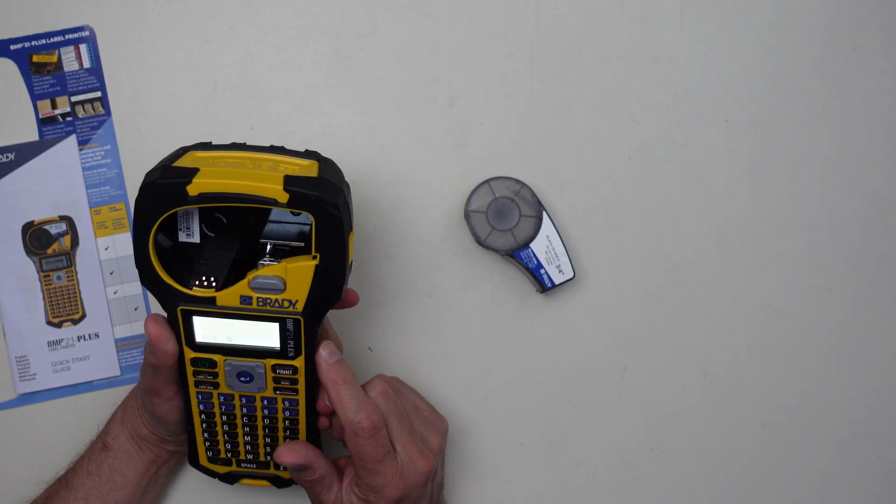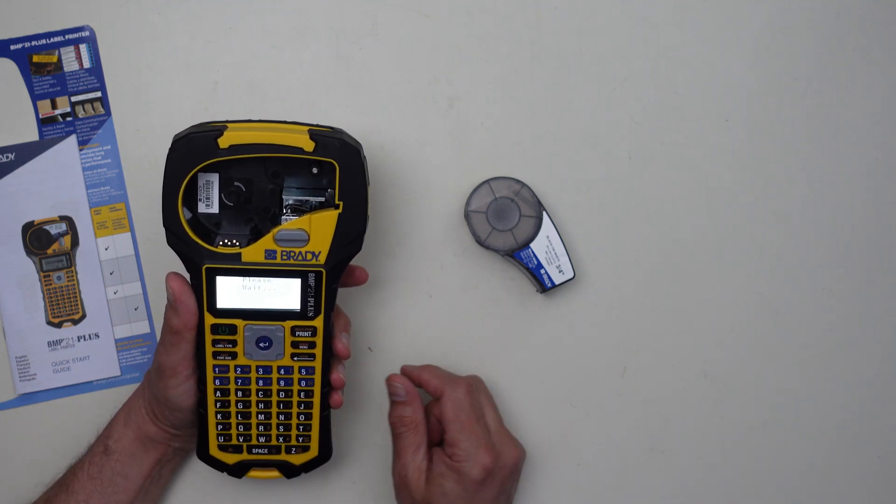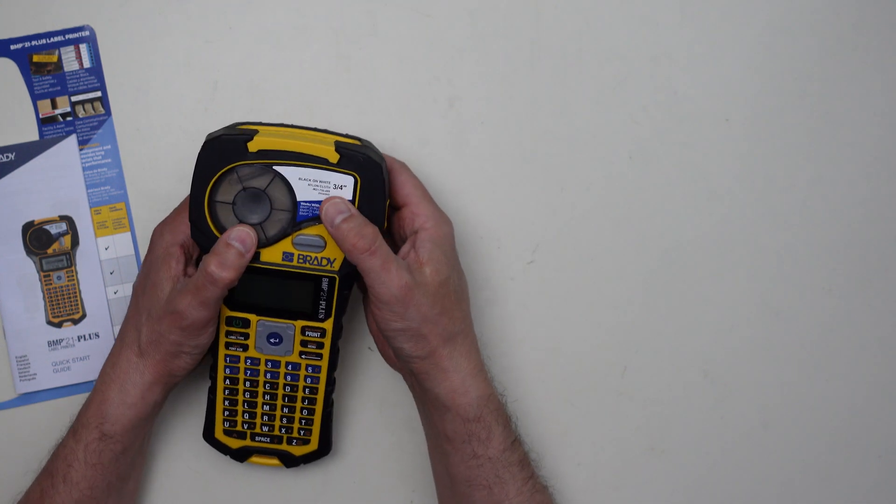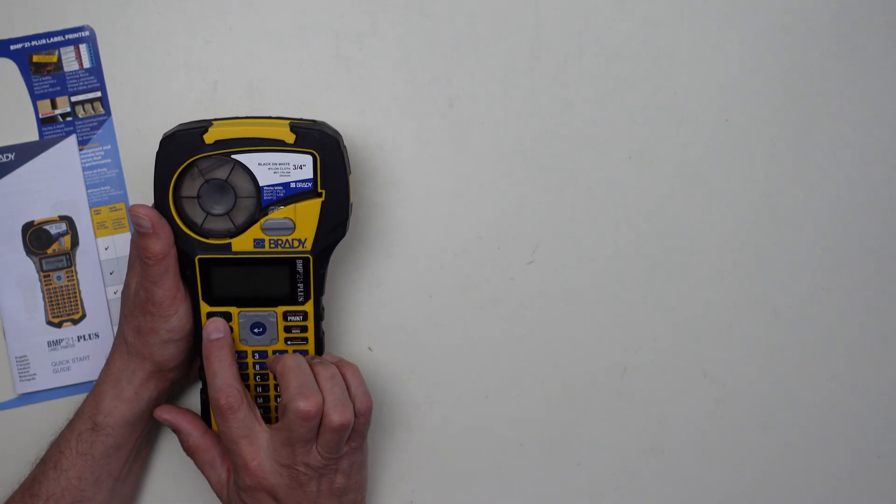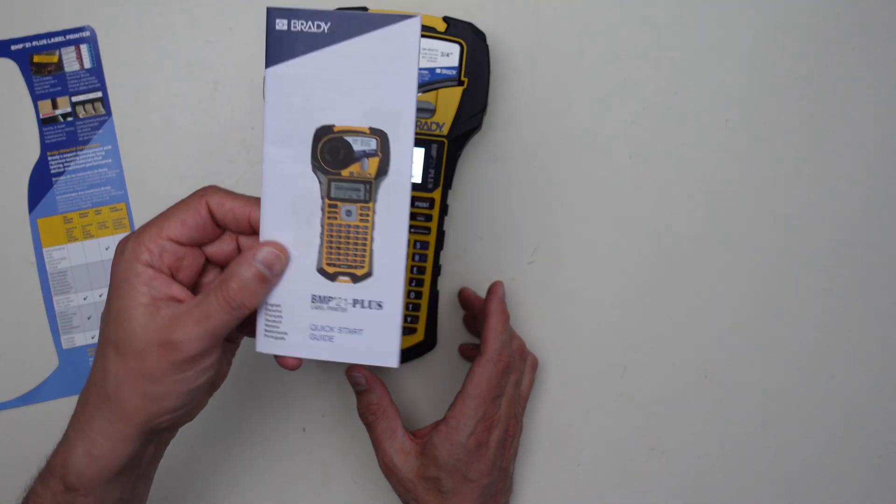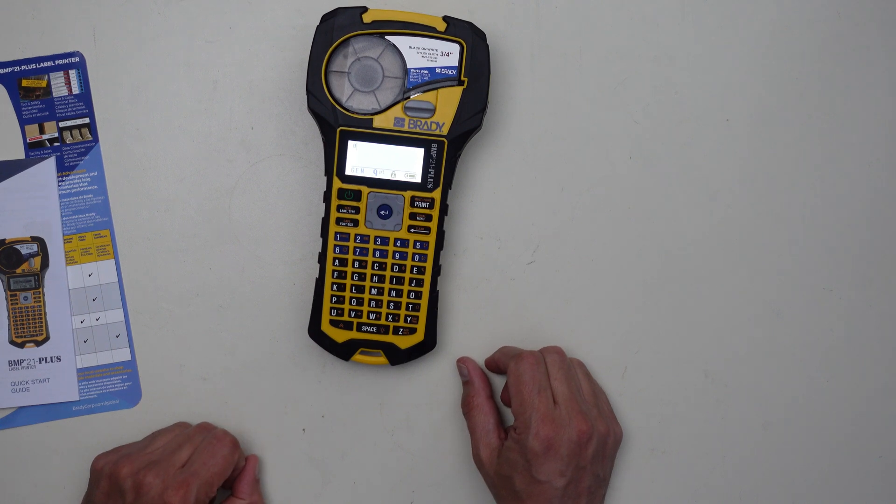It came on already. I guess I must have been pressing the power button by accident. This is the power button right here. Let me power that off and let me put the cartridge back. You're supposed to have the cartridge in before you can initialize it. Now let's power it on and see what we got. Let me read through the manual real quick and find out what I need to do, and then we'll start making some labels for some cables.